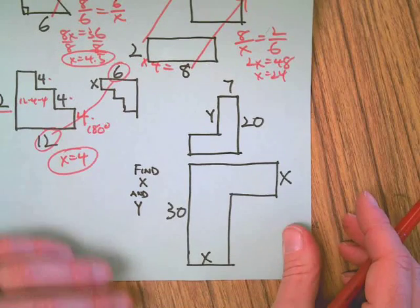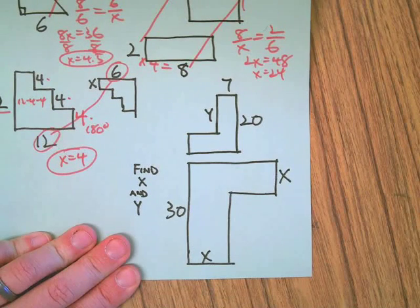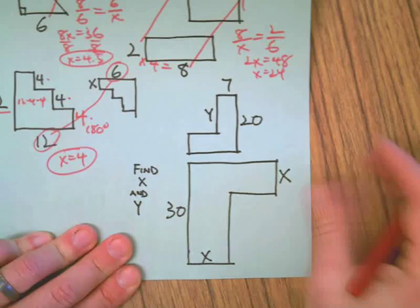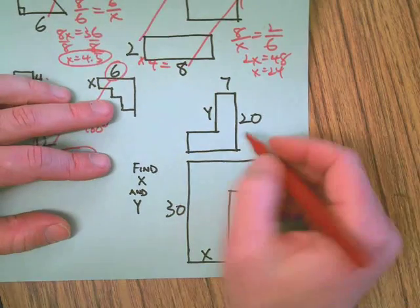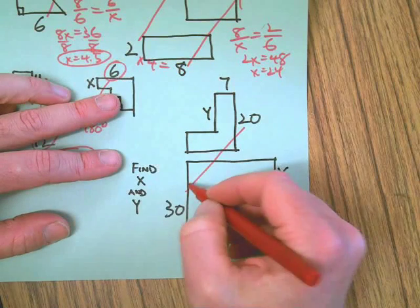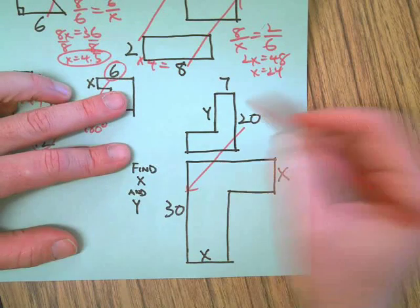And finally, our last problem. Find both X and Y. Oh no, how am I ever going to do this? First of all, we see that the twenty goes with the thirty and the seven goes with the X.